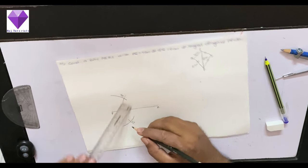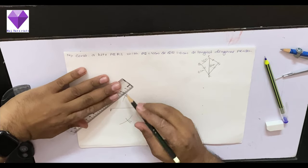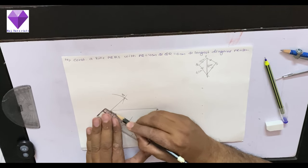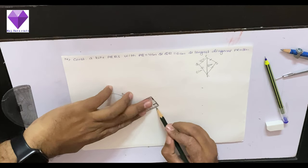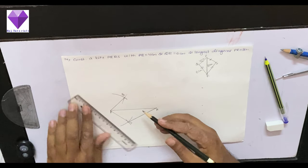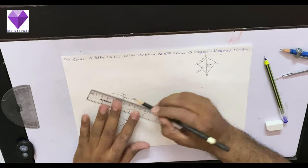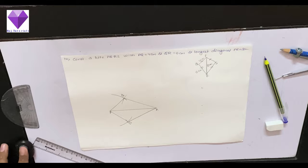Now I will join PQ, PS, SR, and QR. PQRS is my required kite. Thank you.